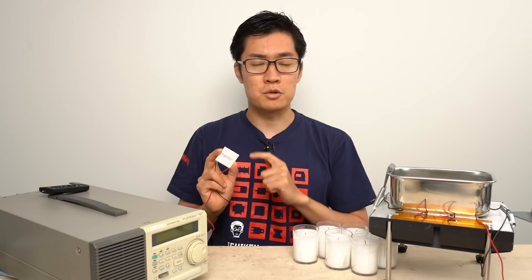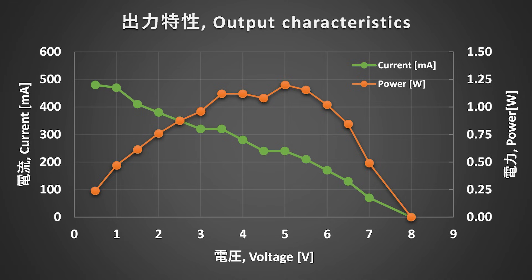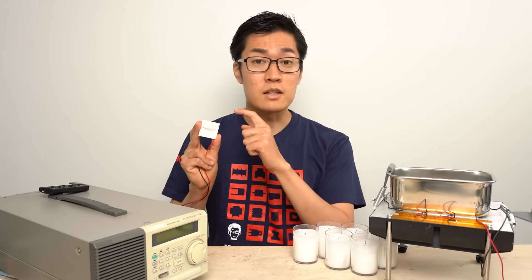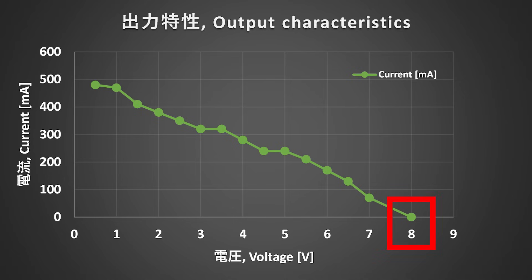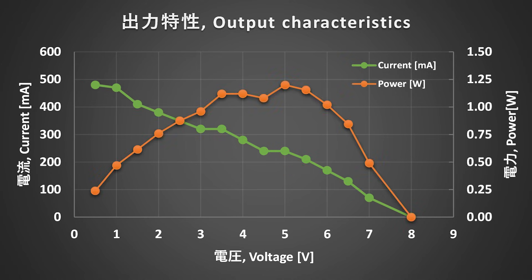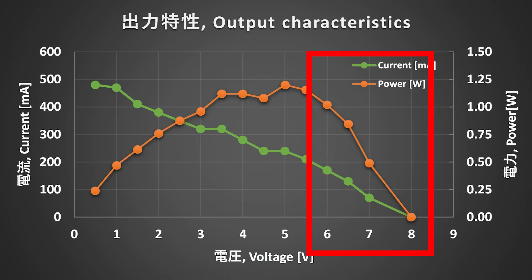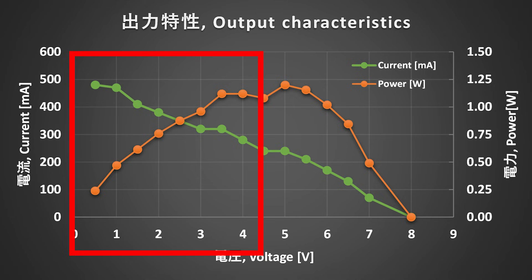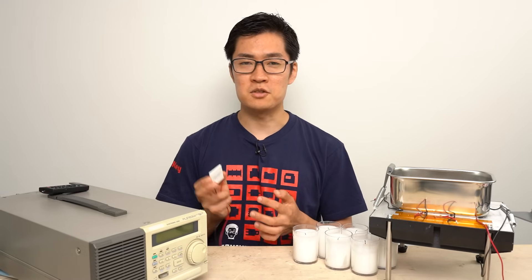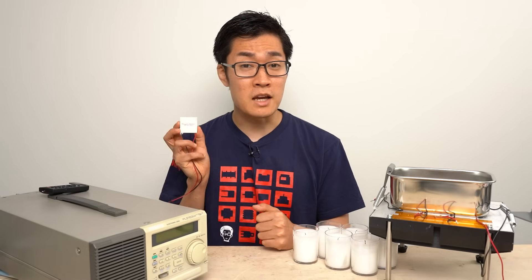I used an electronic load to measure how much power can be extracted from the Peltier devices. Here are the experimental results. The horizontal axis represents the output voltage; the vertical axis represents load current and load power. Since 6 Peltier devices are connected in series, the output voltage is 8 volts, which is high — each Peltier device produces about 1.3 volts. When there is no load, the output voltage is 8 volts; as more load is applied, it decreases significantly. In a nearly short circuit condition, 500 milliamps of current can be passed. The power graph is shaped like a mountain — the highest power of 1.2 watts is extracted when the output voltage is 5 volts. At voltages higher than that, current decreases and so does power; conversely, if too much current is passed, voltage and power also decrease. There is an optimal point where the highest amount of power can be generated — solar power generation works in a similar way.